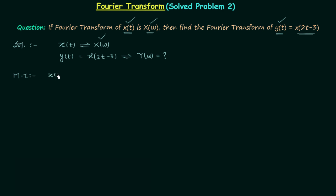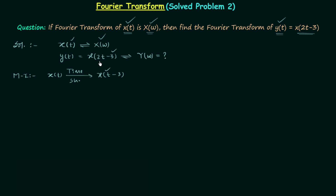Starting from scratch with signal x(t), we want x(2t - 3). We perform the time shifting operation — a right shift by 3 — to get x(t - 3). We perform this shifting operation with respect to t because t is the independent variable. Since x(t) is a function of time t, all operations on time are performed with respect to t.